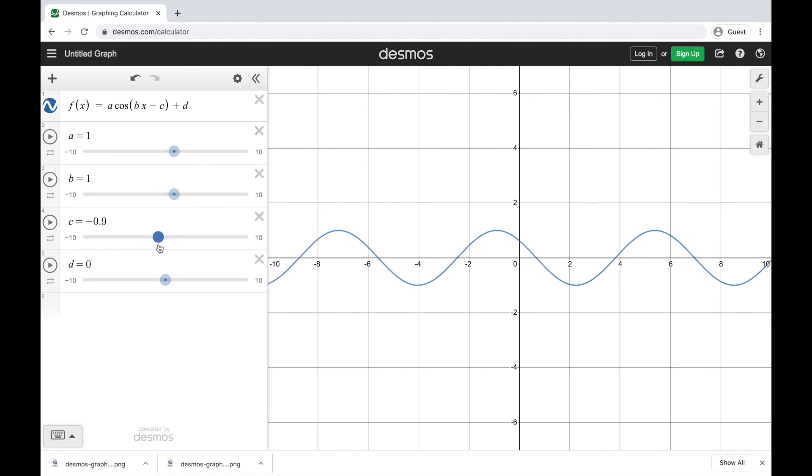And then finally adding a number to the end is going to change the height. Positive numbers will shift this graph up, whereas negative numbers will shift this graph down. So it works just like the graph of sine.